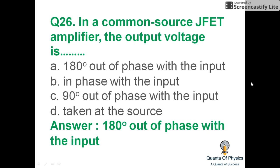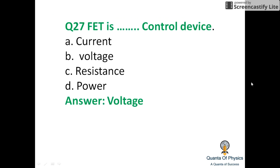In a common-source JFET amplifier, the output voltage is 180 degrees out of phase with the input. Field Effect Transistor is a voltage control device — this is the most important point. BJT (Bi-Junction Transistor) is a current control device.